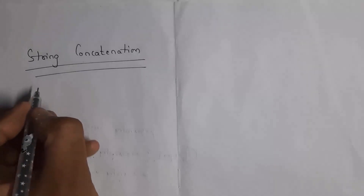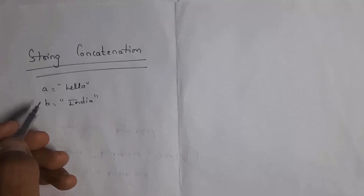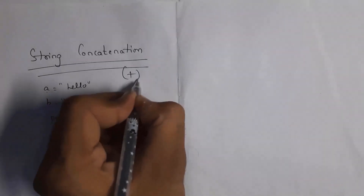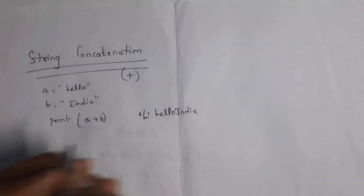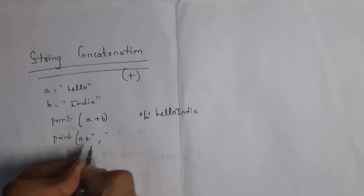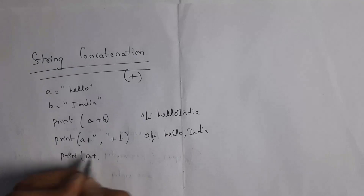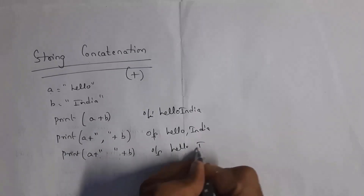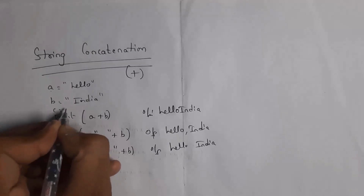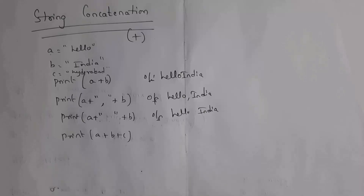Next I will explain string concatenation. Concatenation means combining. With a equal to 'hello' and b equal to 'India', write print a + b — you will get output 'helloIndia' without any space. If you want output 'hello, India', write print a + ',' + b. If you want output 'hello India' with a space, write print a + ' ' + b. If you want to combine three strings a, b, and c, write print a + b + c.